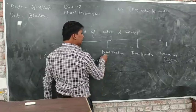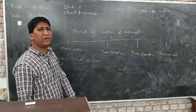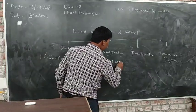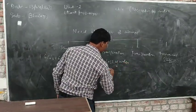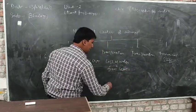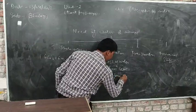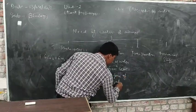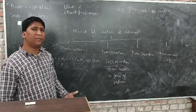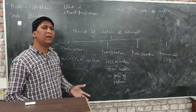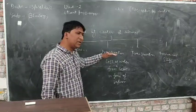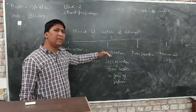Second is transpiration. Transpiration is basically the loss of water from the aerial parts of the plant, just like leaves, in the form of water vapor. If too much water is present in the body of the plant, the plant tries to remove that water by the process of transpiration. Transpiration is a chapter given in our syllabus that we will discuss later.